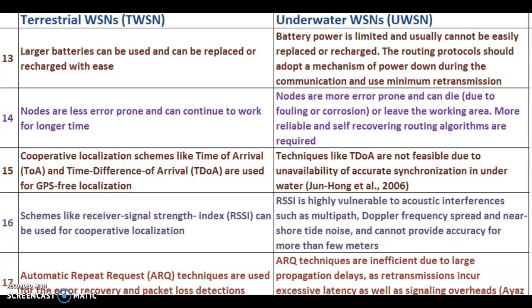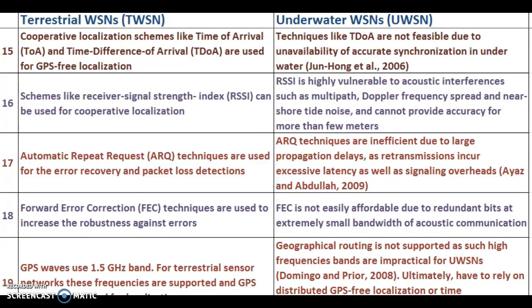Point 16: In TWSN, schemes like Received Signal Strength Index (RSSI) can be used for cooperative localization. In UWSN, RSSI is highly vulnerable to acoustic interference from devices such as multipath, Doppler frequency, speed, and near-shore type noise, and cannot provide accuracy for more than a few meters. Point 17: In TWSN, Automatic Repeat Request (ARQ) techniques are used for error recovery and packet loss detection. In UWSN, ARQ techniques are insufficient due to large propagation delays, as retransmission incurs excessive latency as well as signaling overheads.